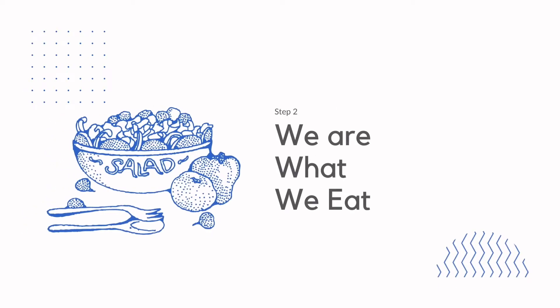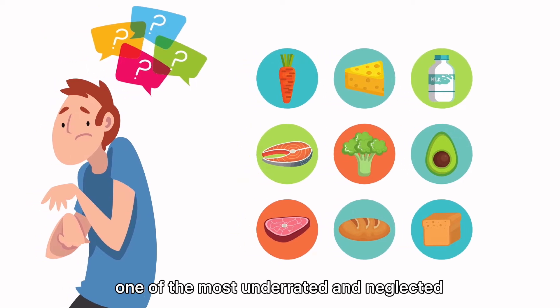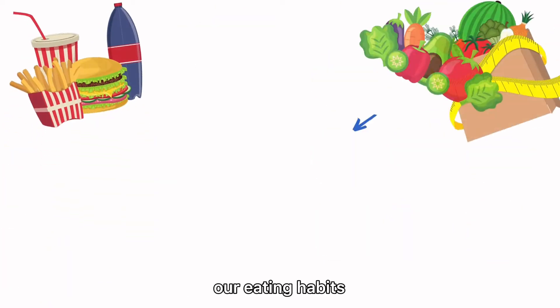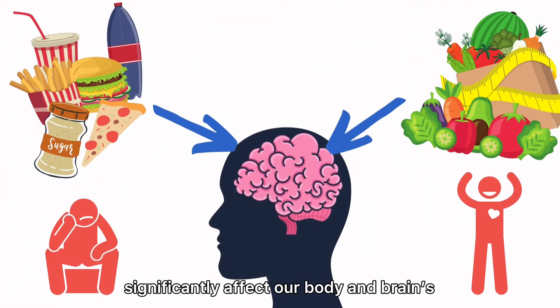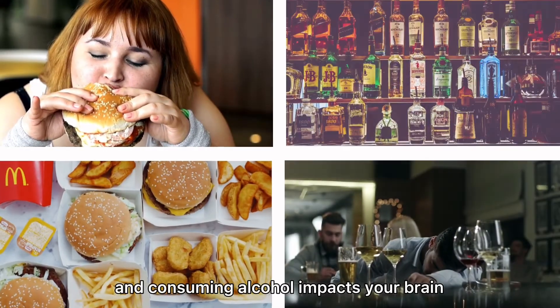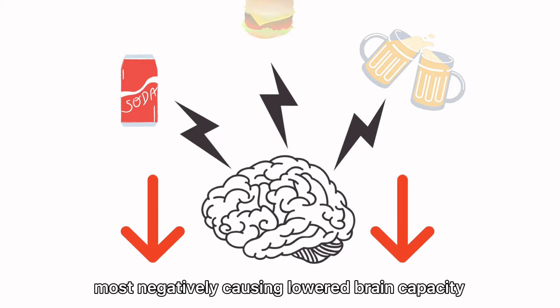We are what we eat. This step is probably one of the most underrated and neglected ways of actually improving your academic performance. Our eating habits significantly affect our body and brain's proper functioning. Eating unhealthy and consuming alcohol impacts your brain most negatively, causing lowered brain capacity.